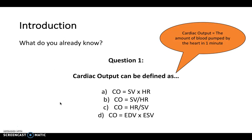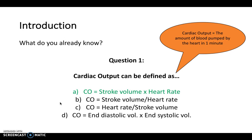In order to answer this question, it's good to think that cardiac output is the amount of blood pumped by the heart in one minute. So logically, your answer is A, because cardiac output is stroke volume times heart rate. Heart rate is the amount of times your heart beats per minute, and stroke volume is essentially the volume of blood pumped by the heart's left ventricle per beat. Multiplying those two together gives you the cardiac output.